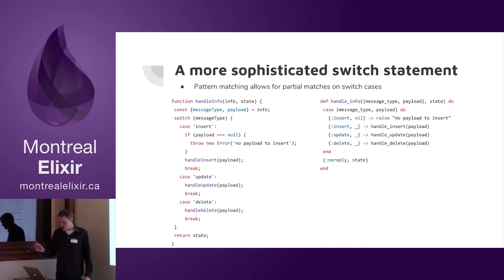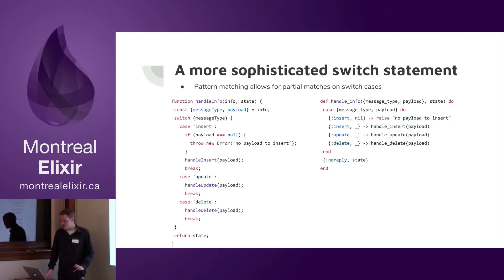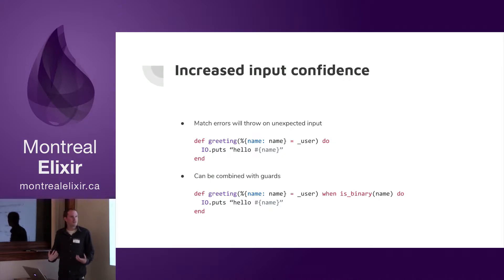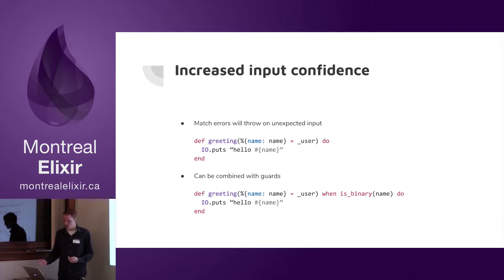There's another thing at play here — in handle_info, I'm not passing a value in directly; I've already declared it as a tuple. This leads us to another use: we can increase the confidence of the input we're receiving within a function by pattern matching on that input at the function level. Here, when passing in a user for a greeting, it must be a map with a name property — if it isn't, that function simply won't match for that input. You can also combine this with guards to specify that name within the map must also be a binary.